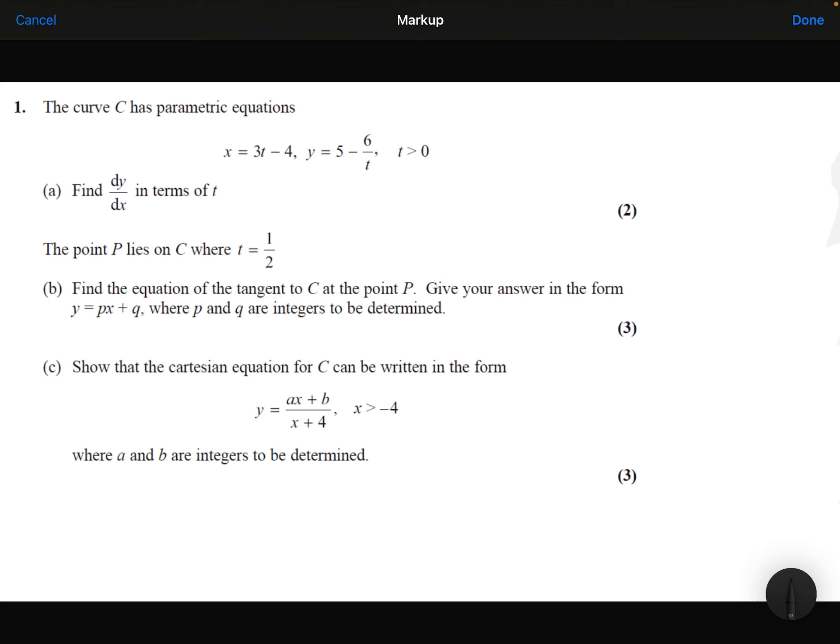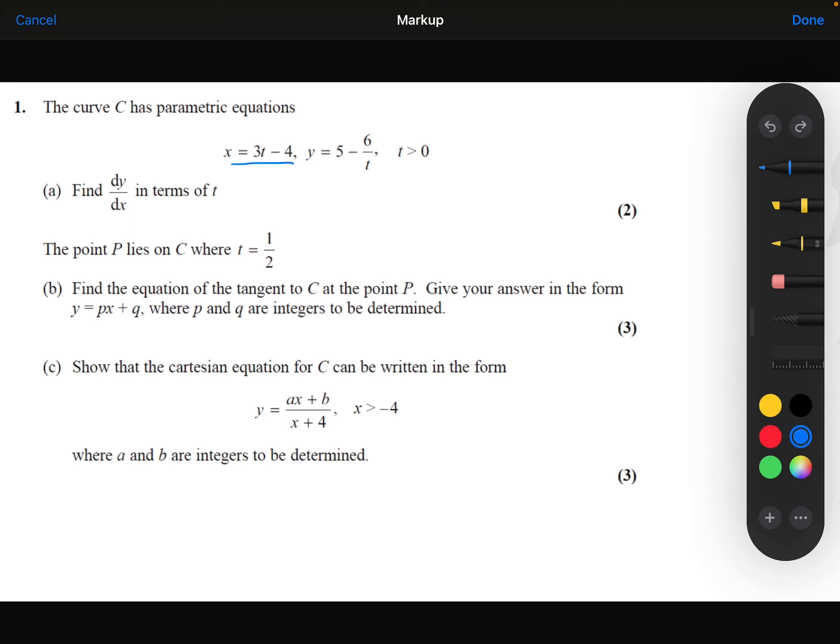So I am going to rearrange my x equation to make t the subject, and then I'm going to substitute that in here. So let's do that. Let's first of all add 4 to both sides, and then divide both sides by 3. So my parameter t has to be equal to x plus 4 over 3.